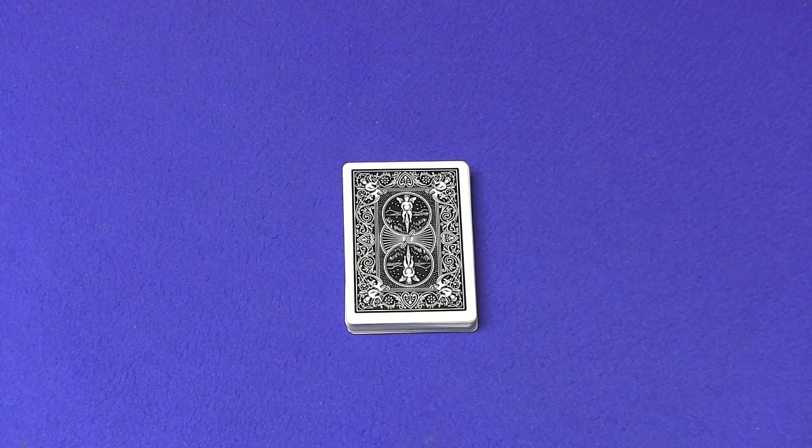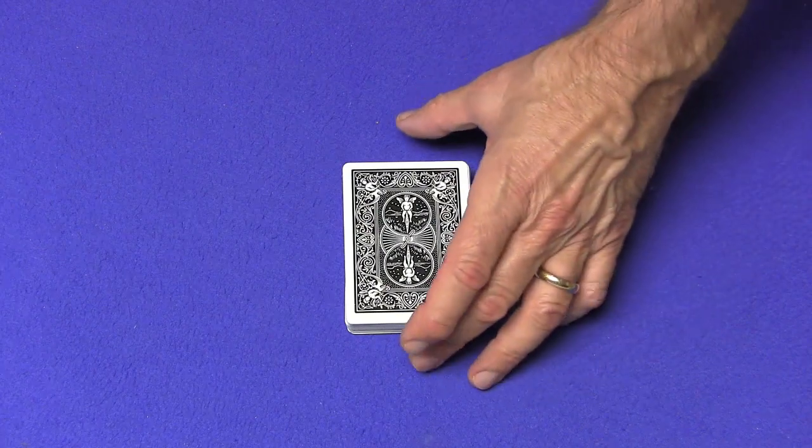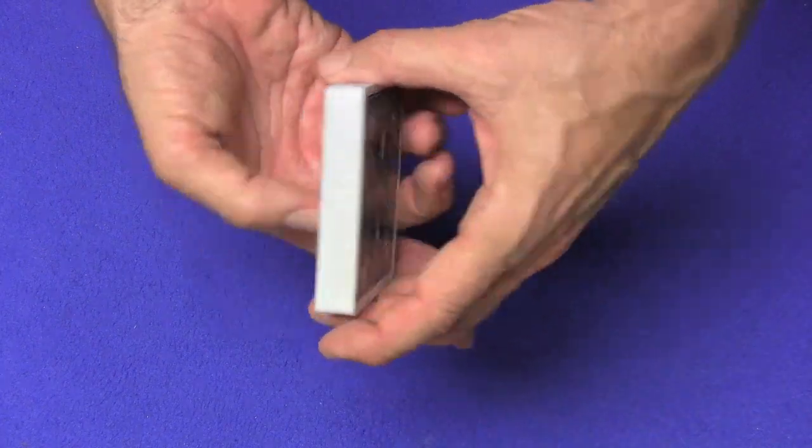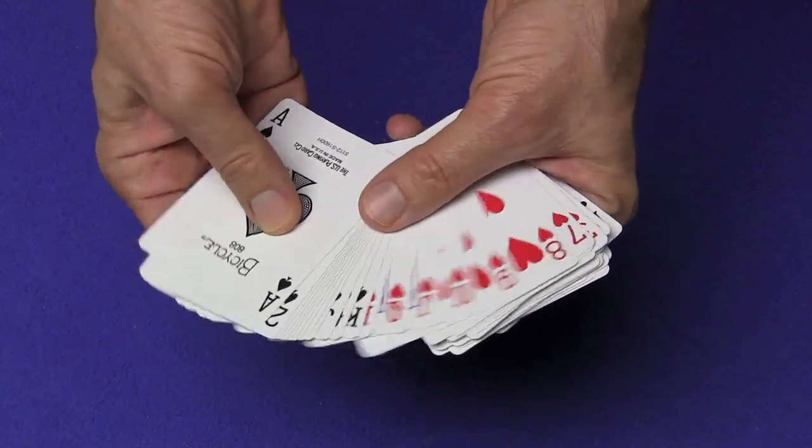This is not an easy false cut. It does take a lot of practice. So let me show you the cut and then I'll show you how it's done. I'm going to be using my black bicycle rider back deck and as you can see all the cards are in new deck order.